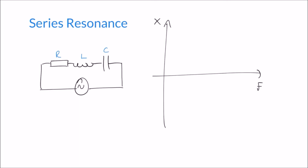Welcome to this video on series resonance. If you've been watching our previous videos, you will have seen that we've worked through some examples of series RLC circuits, calculating things like currents and voltages for different frequencies. In this video we're going to look briefly at the topic of resonance. Resonance is when we cancel out all the reactance in the circuit, so the effects of the inductor and the capacitor are essentially cancelled out, and we're left just with resistance.